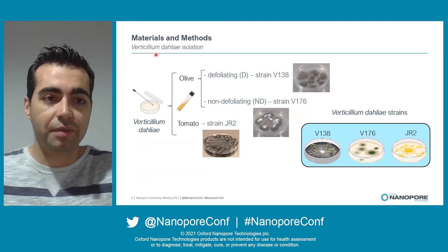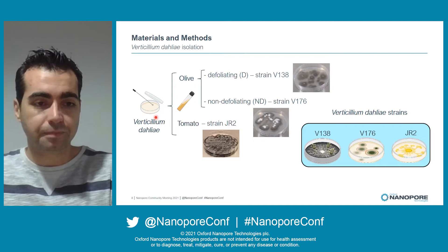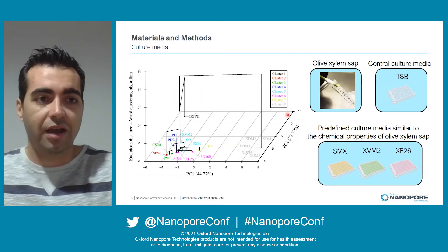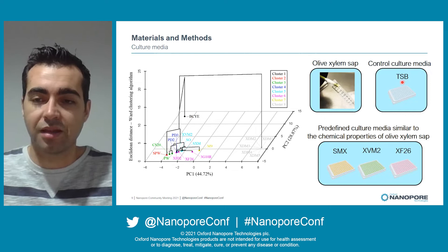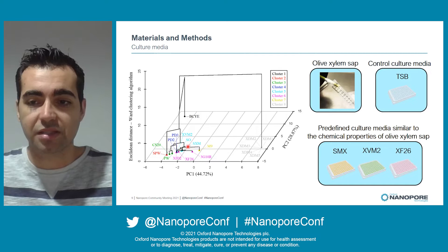For the Verticillium dahliae isolation, we selected the defoliating and the non-defoliating strains that infect olives, and one strain that infects tomatoes — giving us three Verticillium dahliae strains. As culture media, we used the olive xylem sap and TSB as a control culture medium, and also three predefined culture media with chemical properties similar to olive xylem sap.